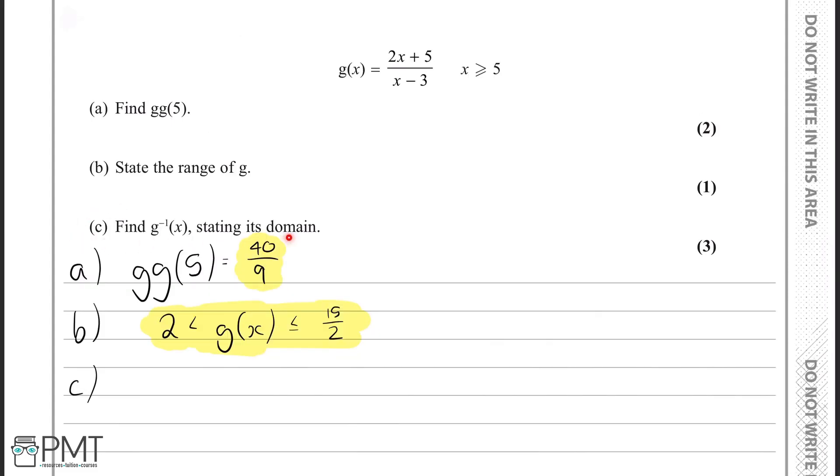For part c of this question, we need to find the inverse of g of x and also state its domain. Let's start by the first part, just finding the inverse of g of x. Essentially, we have the g of x is 2x plus 5 over x minus 3. We're trying to find the inverse of this.